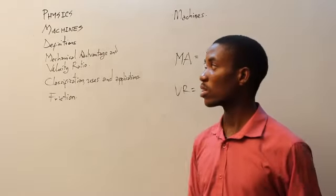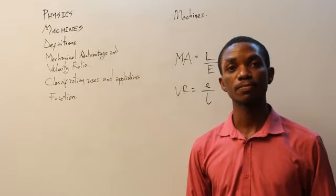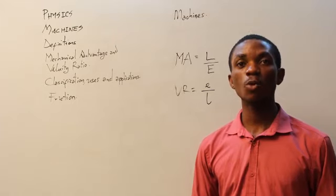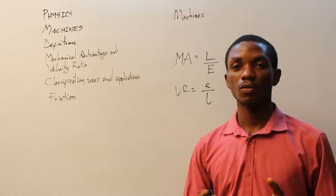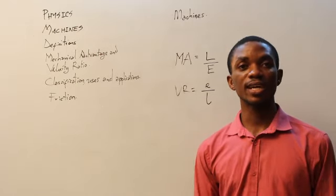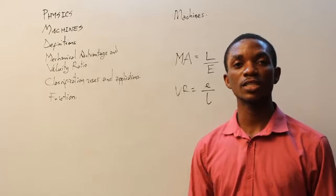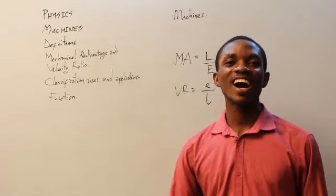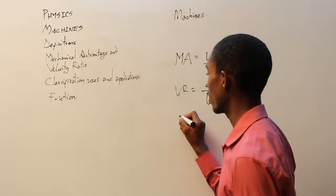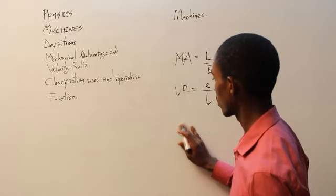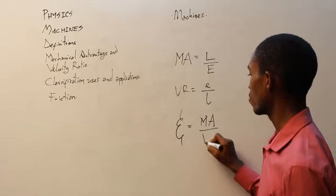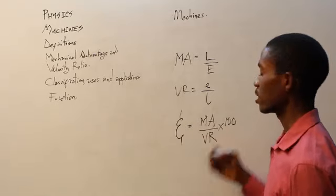There is an entity also described as efficiency. What do we mean when we talk about efficiency? Efficiency refers to how well — to what extent — was our intention achieved. Our design has been done, our effort has been put in, our load has been lifted. How well did this machine work? Efficiency, identified with the letter E, equals mechanical advantage divided by velocity ratio, multiplied by 100, and is measured in percentage.